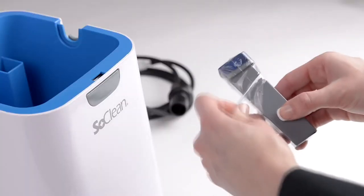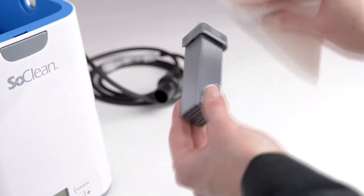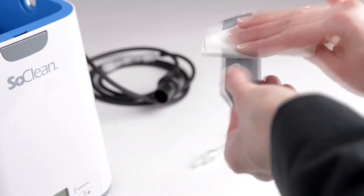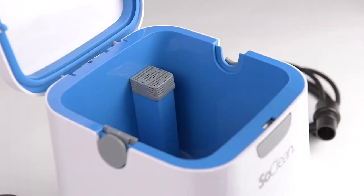Remove all protective plastic and tape from the new filter. You may see some black particles on the filter or on your hands. This is normal from the settling during shipping and can be wiped off. Place the new filter into the SoClean.